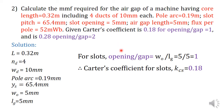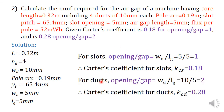In the case of ducts, opening per gap is calculated as the width of duct divided by LG, which is 10 divided by 5, equal to 2. Since the opening per gap is equal to 2, the Carter's coefficient for ducts, KCD, is equal to 0.28.